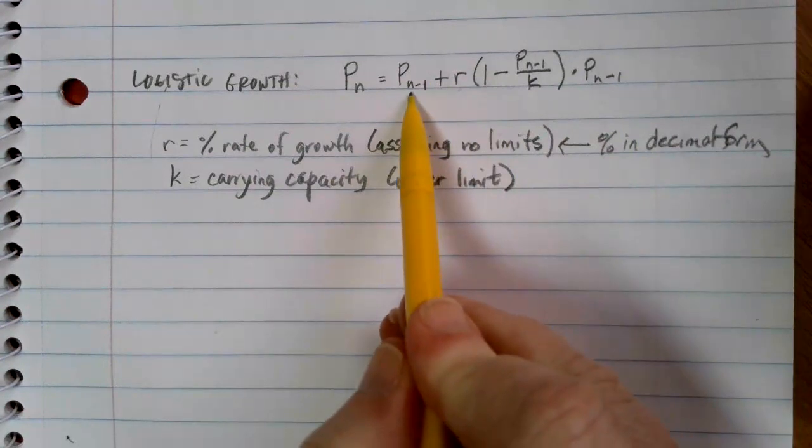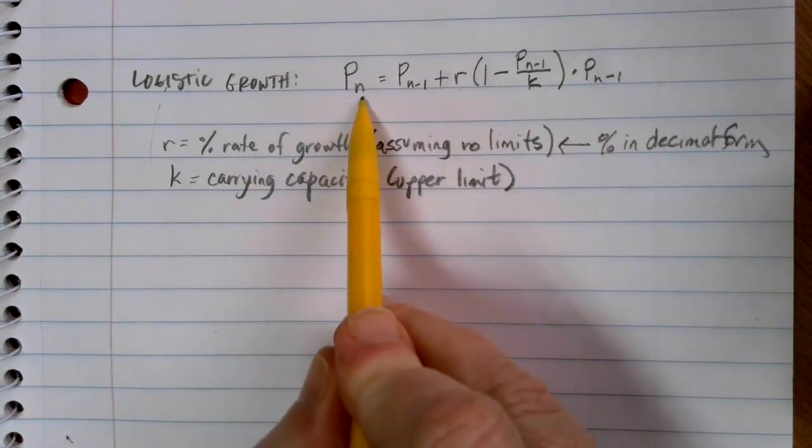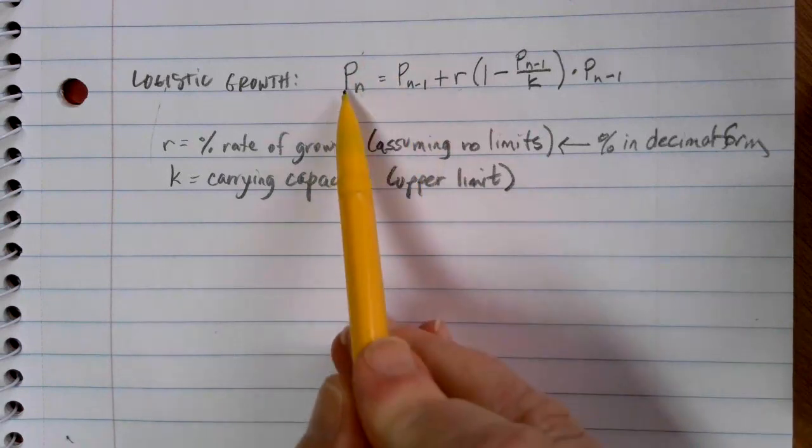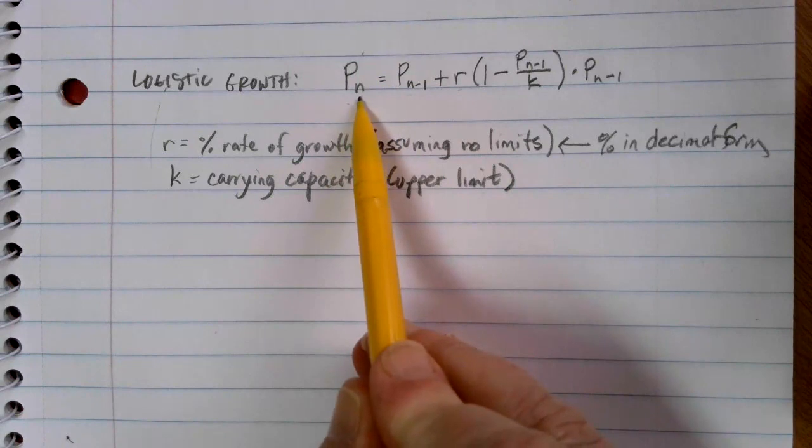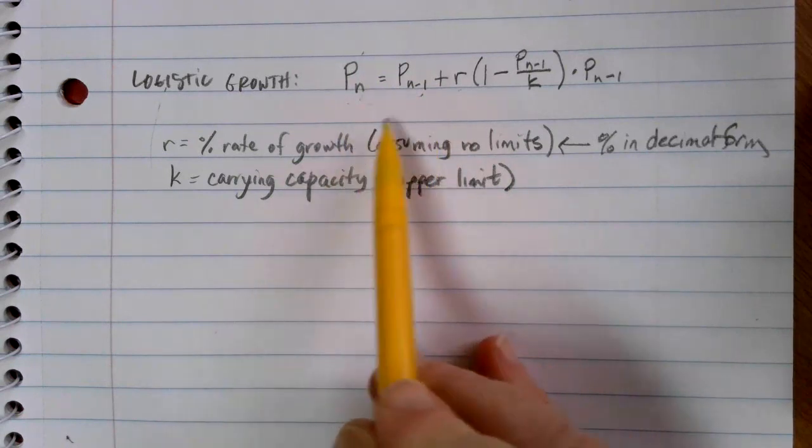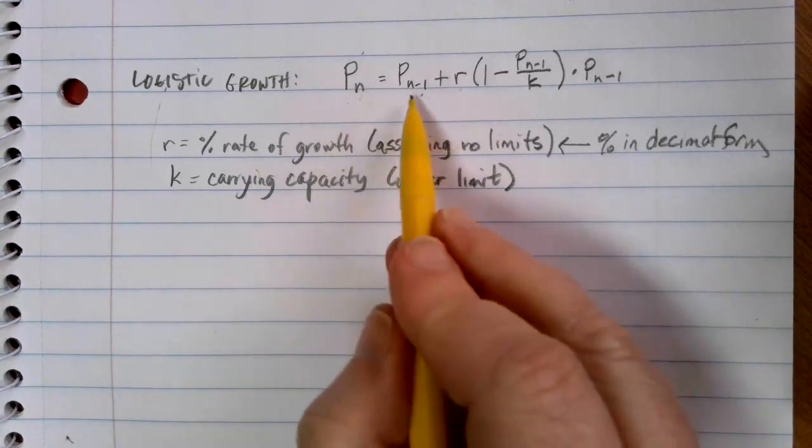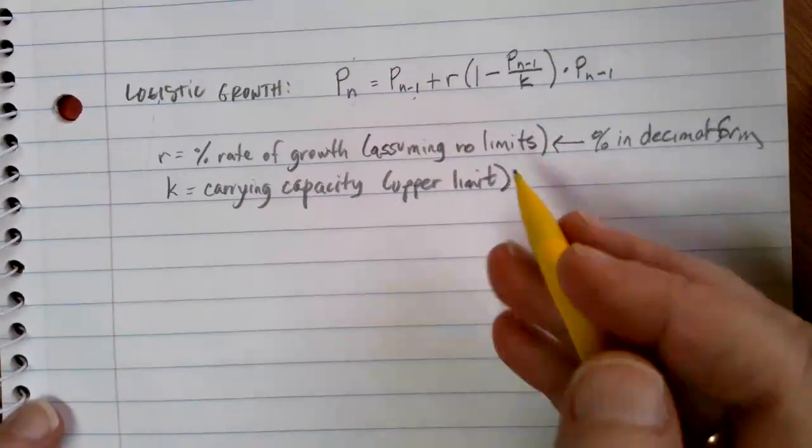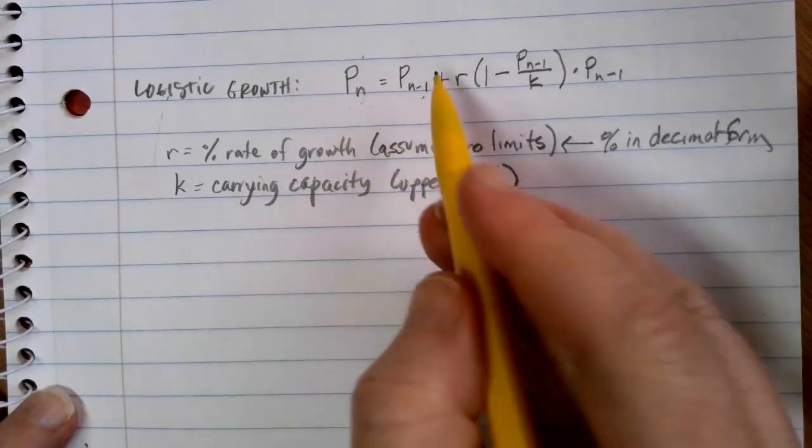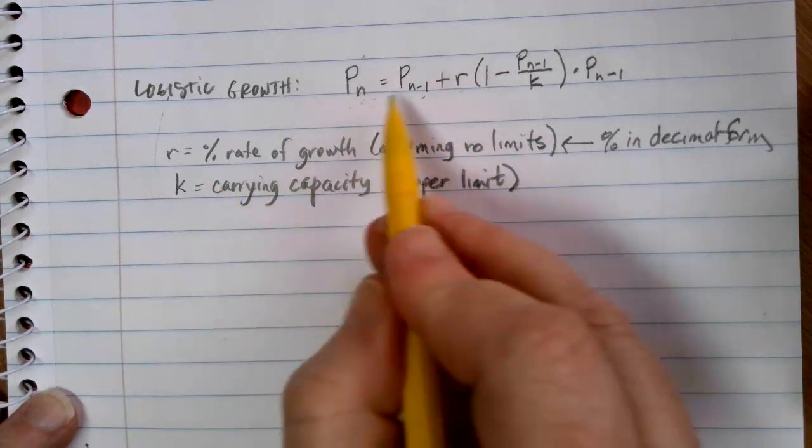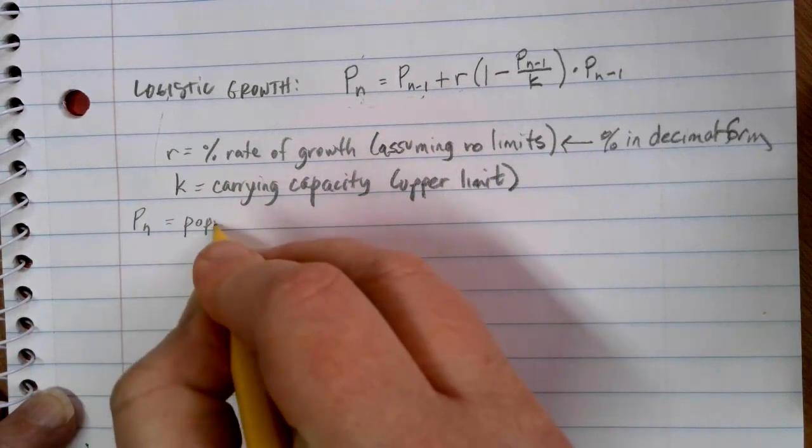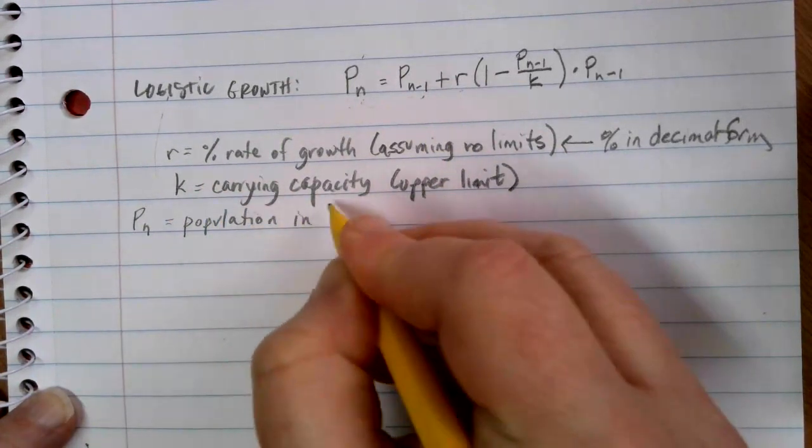Now, the P with the N minus 1 here and the P of N. Notice that these are what we call in the subscript place. Before, we would have things up at the top and those would be exponents. When the variables or pieces are down here in the subscript position, it's just a label. It's just so that we can tell the difference between these two populations. They're both populations, but they're representing something slightly different. We aren't going to do any subtraction of 1 here for anything. It's just to kind of tell us the difference between things.